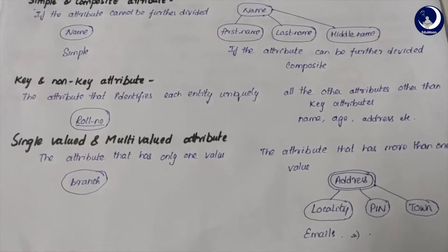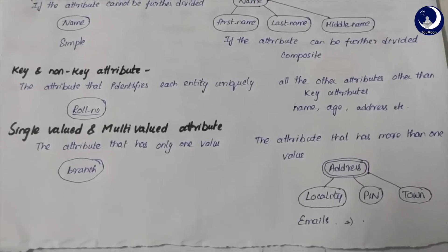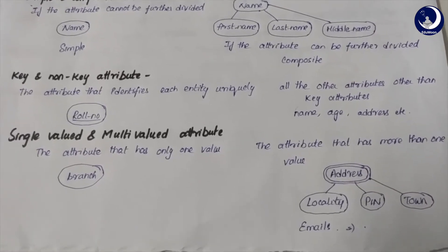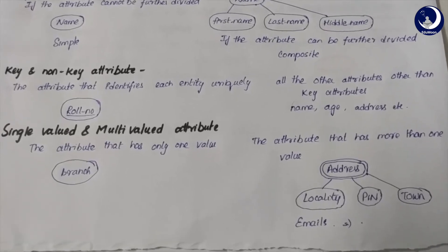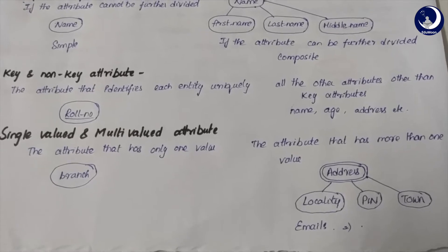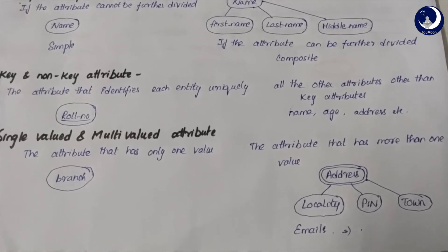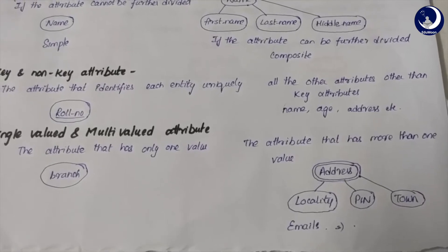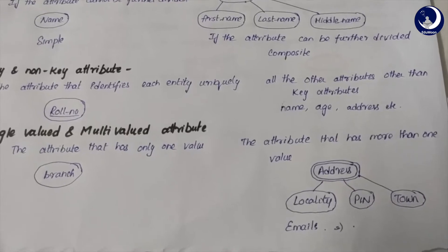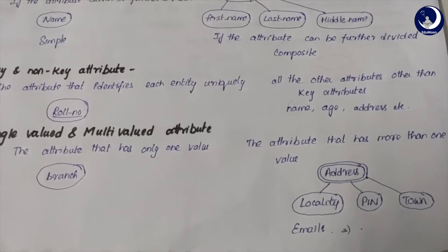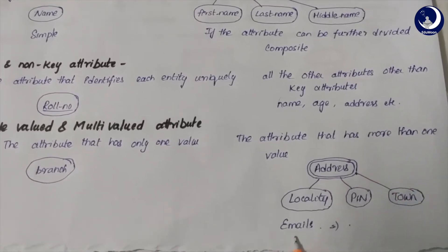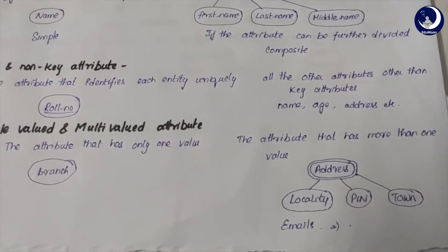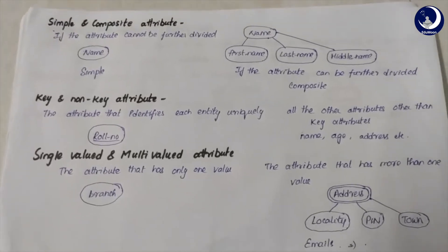The third classification is single-valued and multi-valued attributes. A single-valued attribute can take only one value, while a multi-valued attribute can take more than one value. For example, a student's branch can only be one value — either CSE, ECE, or Civil. Whereas address can take multiple values such as locality, pin and town. In an ER diagram, multi-valued attributes are represented with double ovals. Similarly, an email attribute can be multi-valued if both a primary and secondary email are stored.